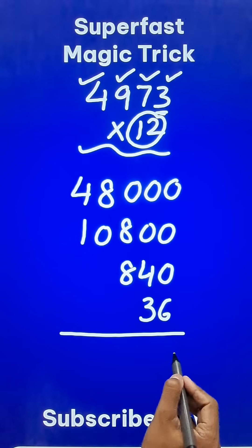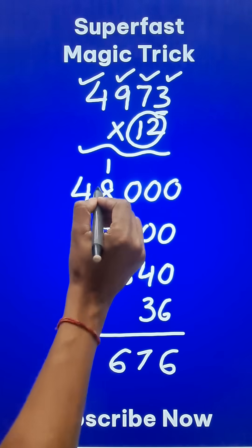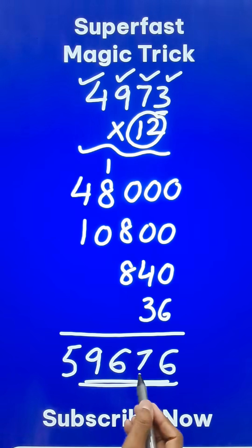And then add vertically you get a 6, you get a 7, then 8 plus 8 is 16, 6 with 1 carry. So this becomes 9 and then we have the 5.